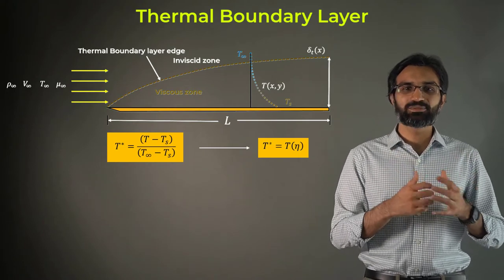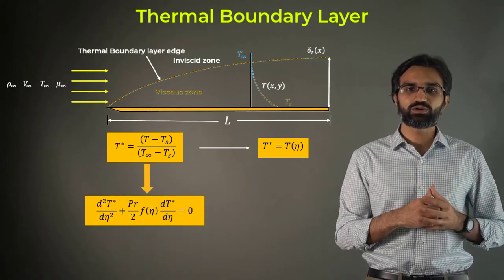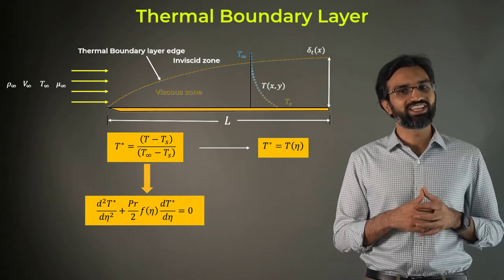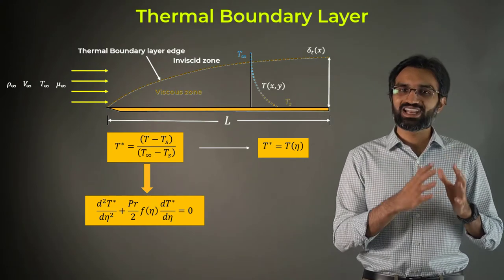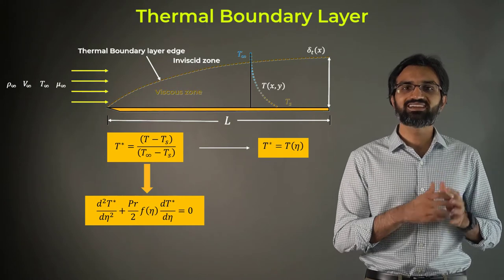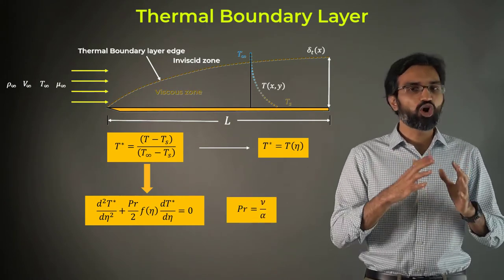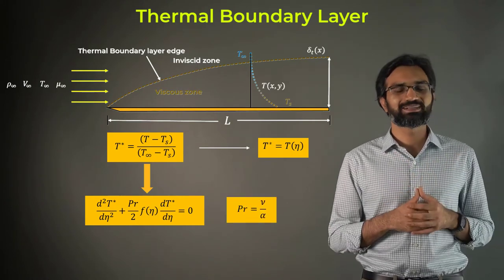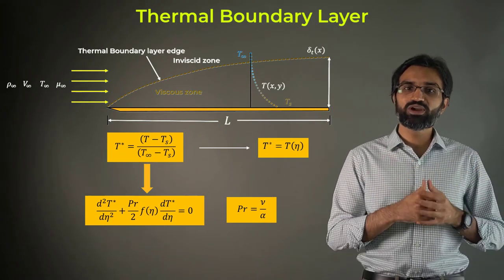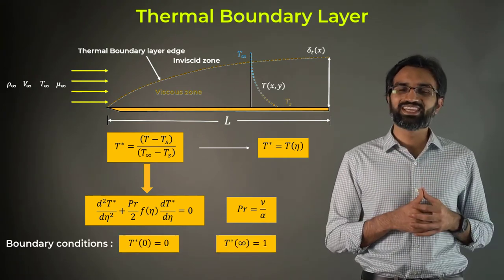Following the same similarity approach, we rewrite the boundary layer energy equation into the following ODE. For laminar flows, it is important to note that the thermal boundary layer solution is dependent on the Prandtl number. We need the following two boundary conditions to solve this ODE.